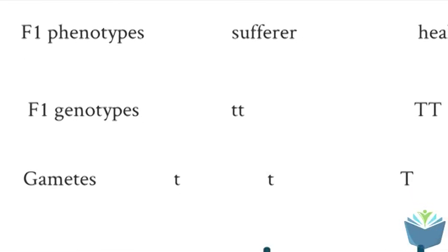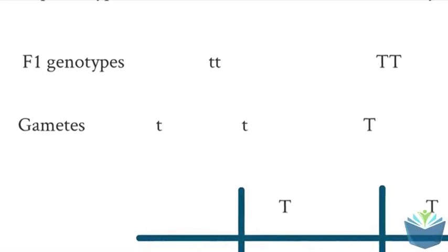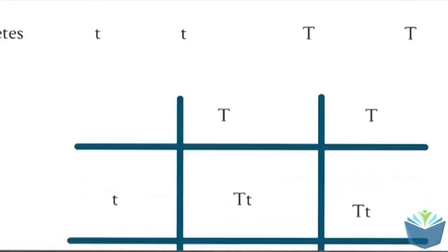And so the gametes in this instance will be, if this is the male, all of the sperm will contain the allele for the disease. And in this case, these eggs will all contain the healthy allele. And so the Punnett square for this will look like this.